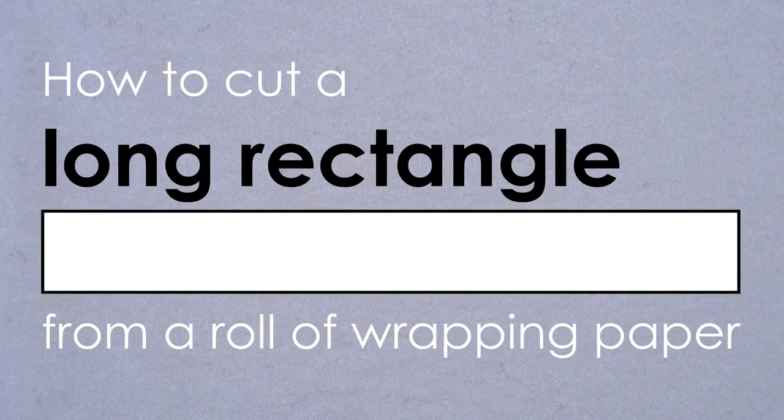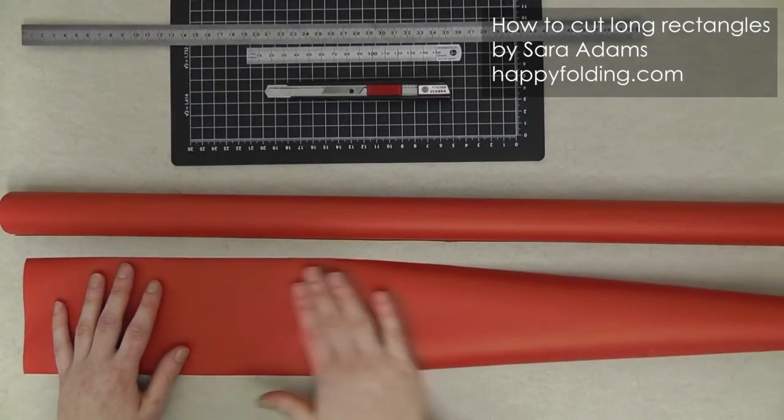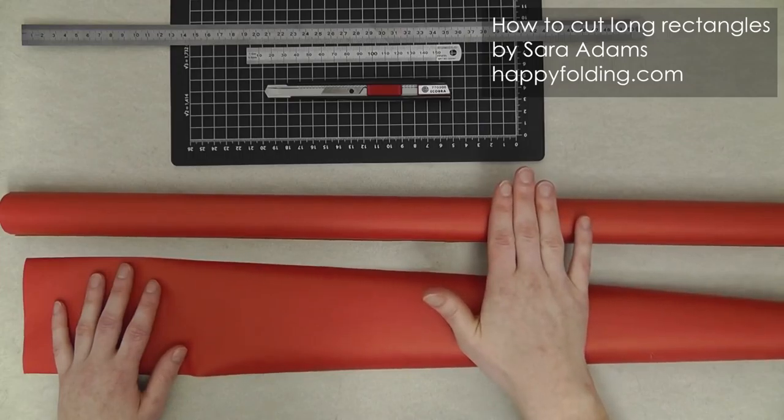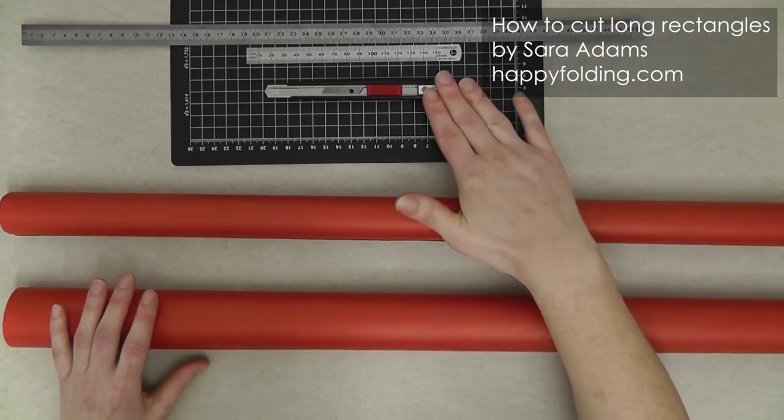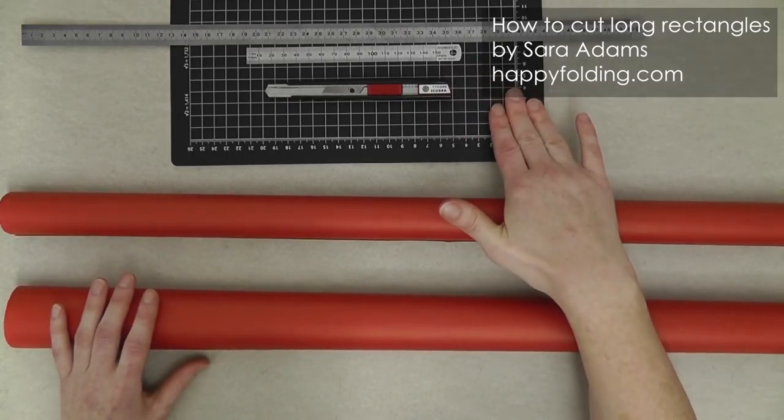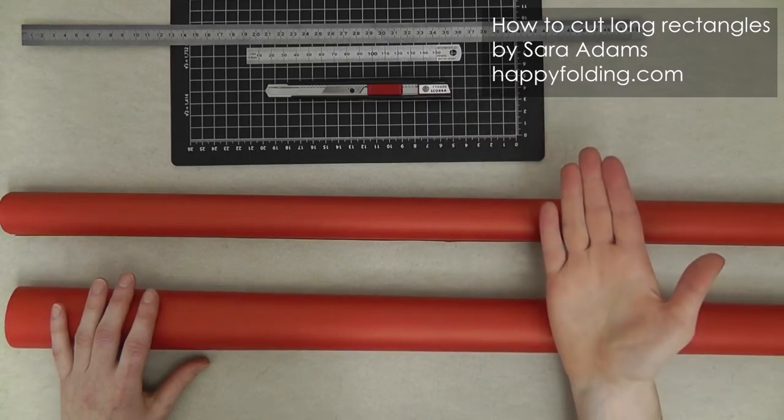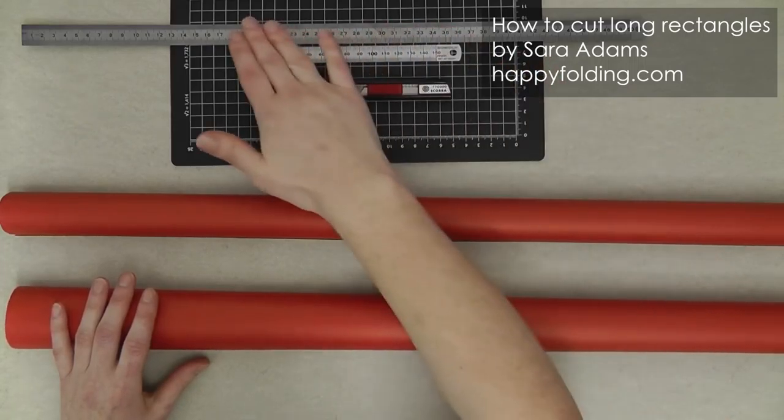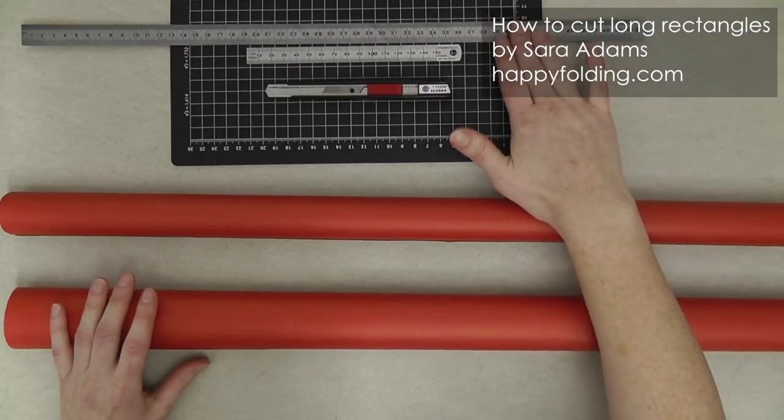In this video, I'm going to show you how I like to cut long rectangles from a roll of wrapping paper. I'll be using my cutting knife and cutting mat, because that's the way I like to cut paper, and a ruler, very important, and something long with a straight edge.